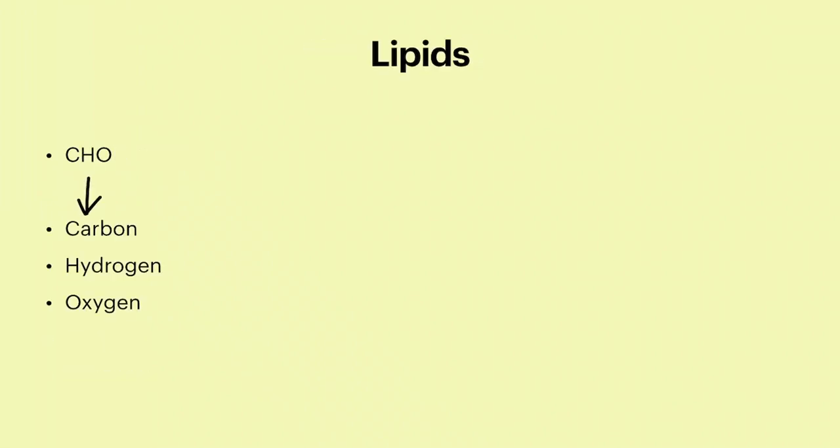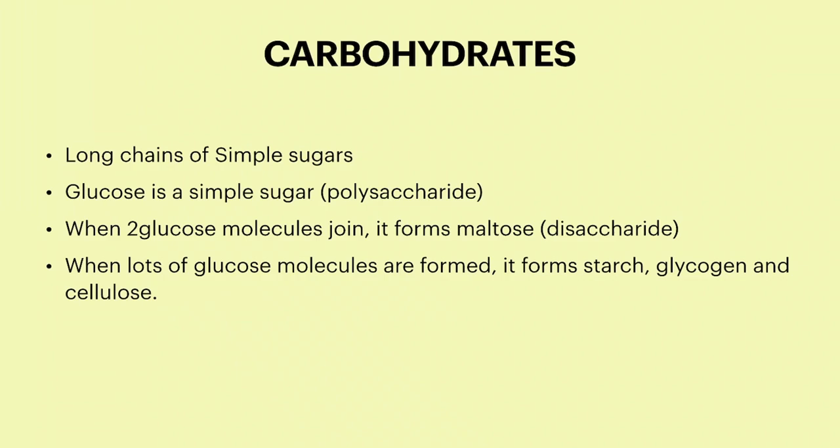Carbohydrates are long chains of simple sugars. Glucose is a simple sugar which forms a polysaccharide. When two glucose molecules join together, it forms maltose, a disaccharide. When lots of glucose molecules join, it forms starch, glycogen, and cellulose.